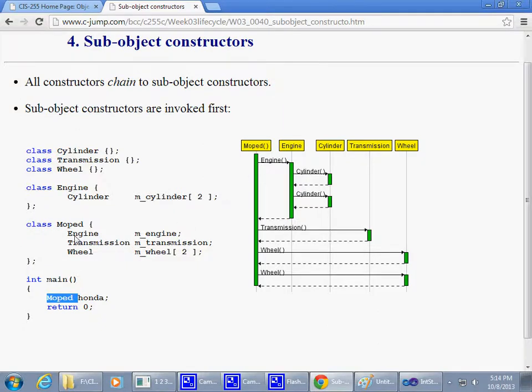So first of all, take a look at this. A moped is defined as first having an engine. That is guaranteed that the engine constructor will be invoked right at this point, right at the beginning. The engine itself says that I have two cylinders, so it has a composition of two cylinders in the form of this array of two cylinders, and those themselves are also classes. So guess what? The cylinder class constructor is invoked twice. And then the engine constructor finishes, and we go back to the moped constructor.